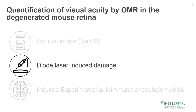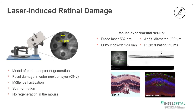When we look at a different animal model — in this case the diode laser-induced damage to the photoreceptors — it looks a little bit different. We are using a model of photoreceptor degeneration induced with a diode laser of 532 nanometer wavelength. We induce four to six laser spots to the retina with a diameter of approximately 100 micrometers.